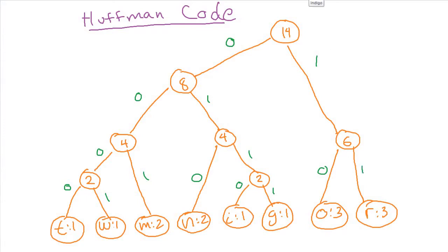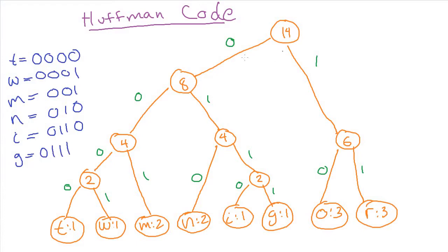Then for a given input symbol, like the T here, we follow the path to get to T and record if we take a zero or a one at each step. So to get to T we go zero zero zero zero. That's the code for T, four zeros. Then for W, it would be zero zero zero one. For M, it's zero zero one. Notice that M occurred more times in the input than T and W, so it was given a shorter code because of the way that this scheme is working. Next we have N, which is zero one zero. Then I, which is zero one one zero. G, which is zero one one one.